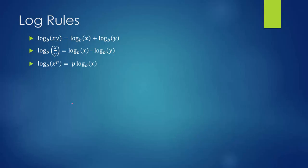There are a few log rules to know. If two numbers are multiplied together and we take the log of them, we can take the log of each individual number and add them — those are equivalent. With division, instead of adding we subtract. With exponentiation, we can pull the exponent out front and multiply. We're going to use this exponent rule in the next slide for pH and pOH math.